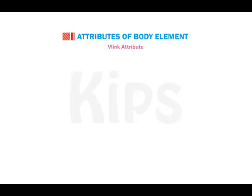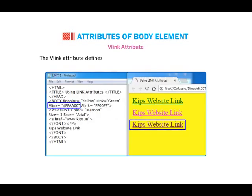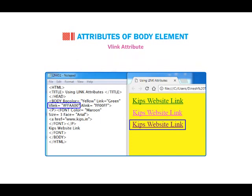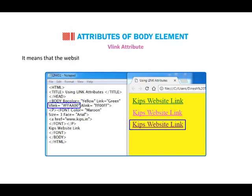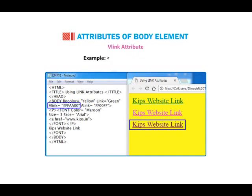V-Link Attribute. The V-Link attribute defines the color of the link after it has been visited. When you close the website that has been opened using a link and go back to see the link, you will see that it will be in purple color. This means that the website connected to the link has already been opened using the link. Example: body vlink="#ff00ff".